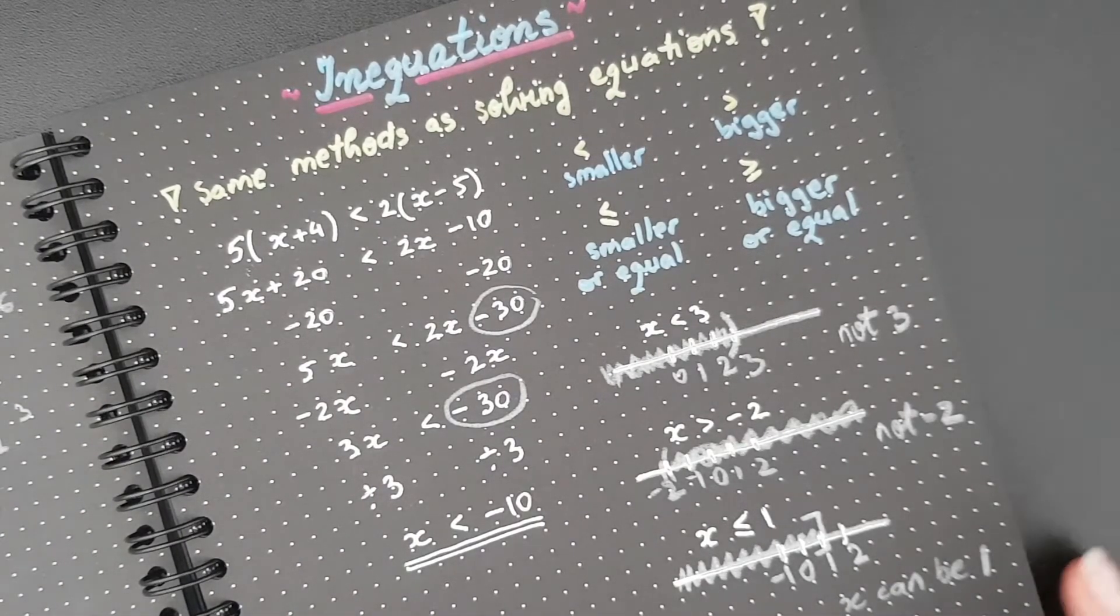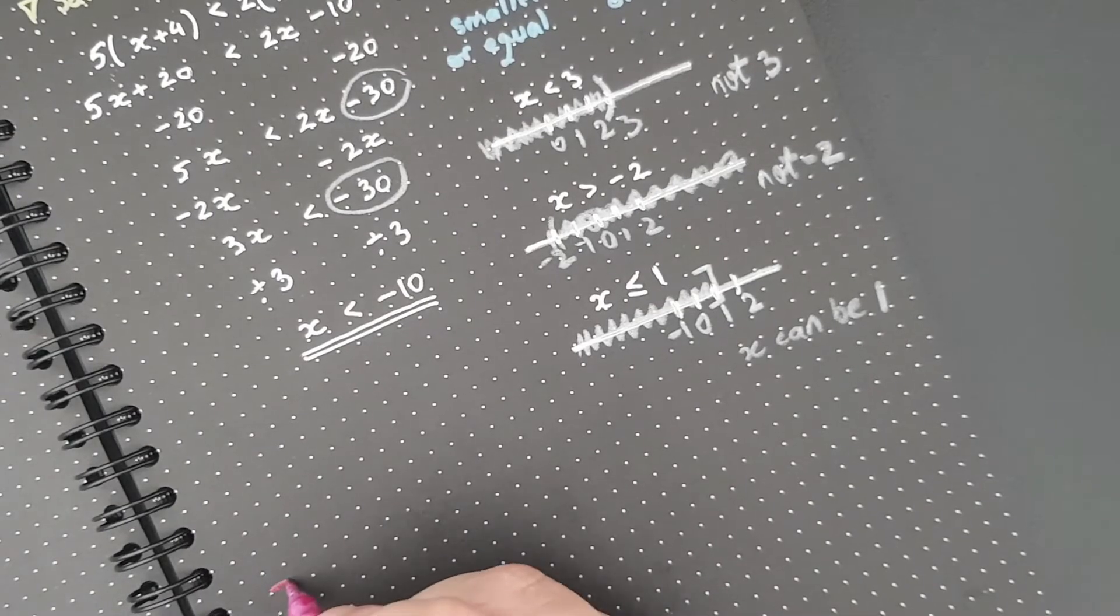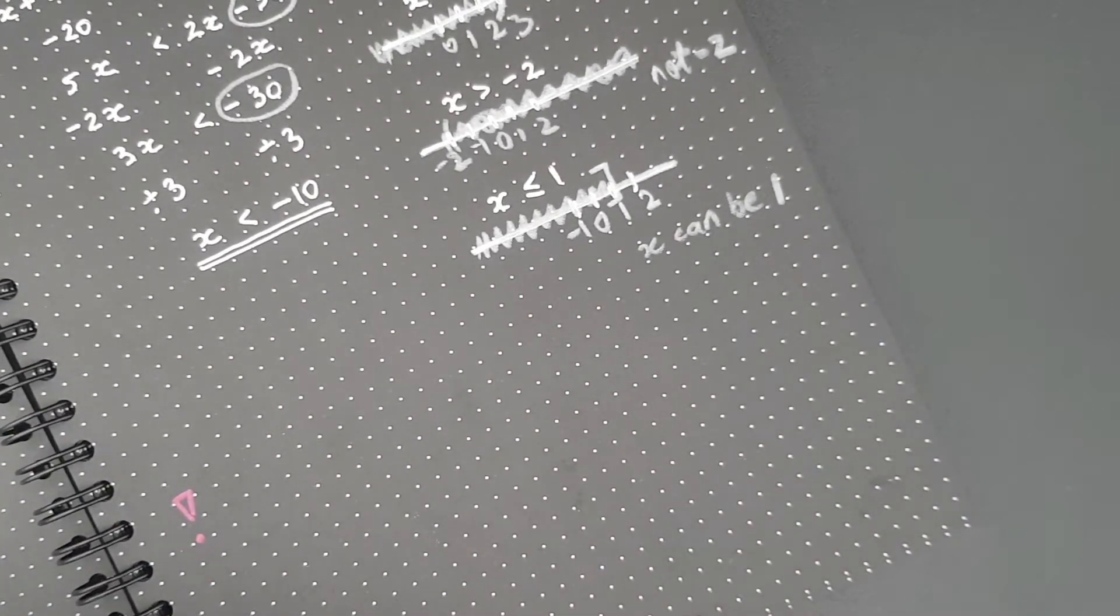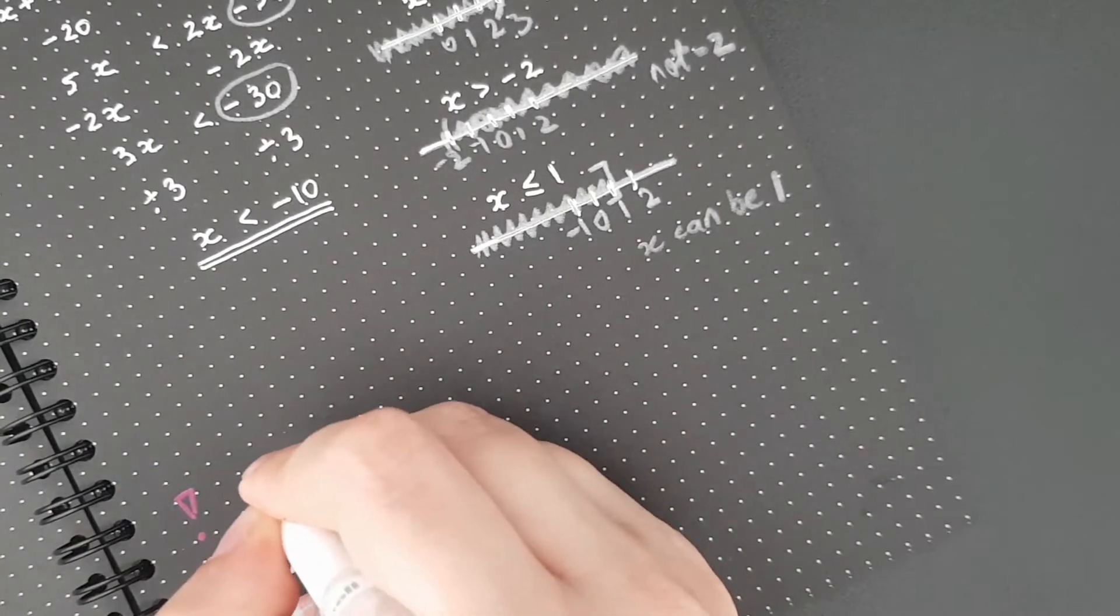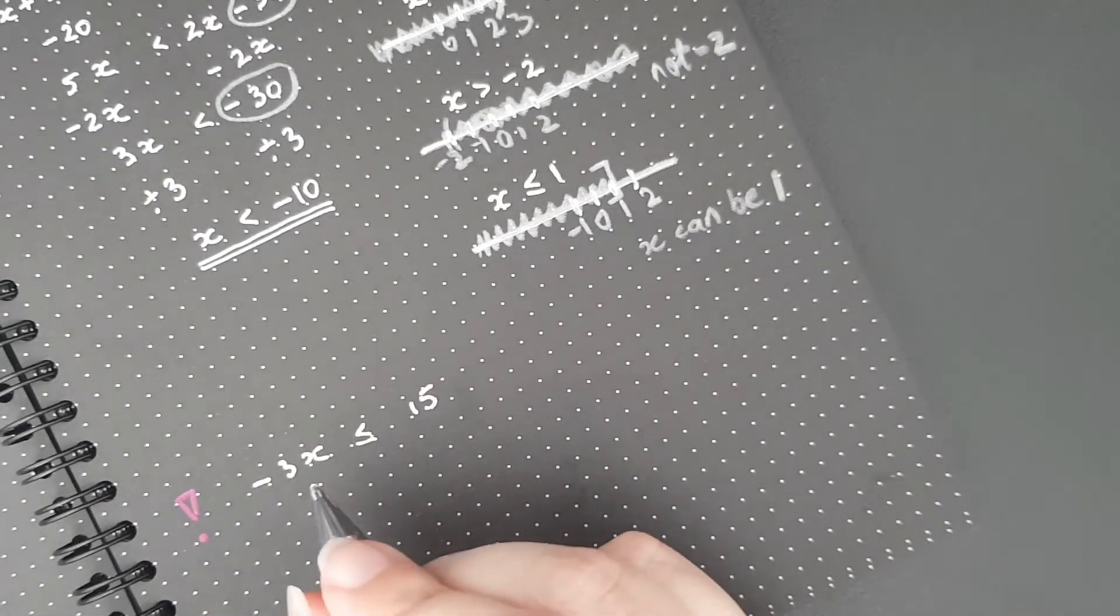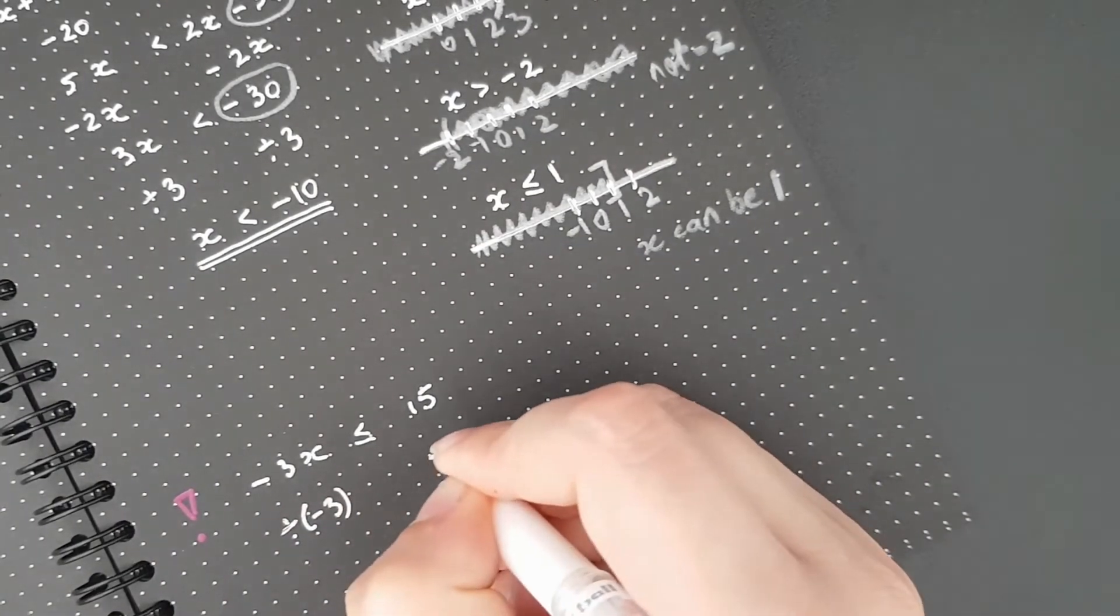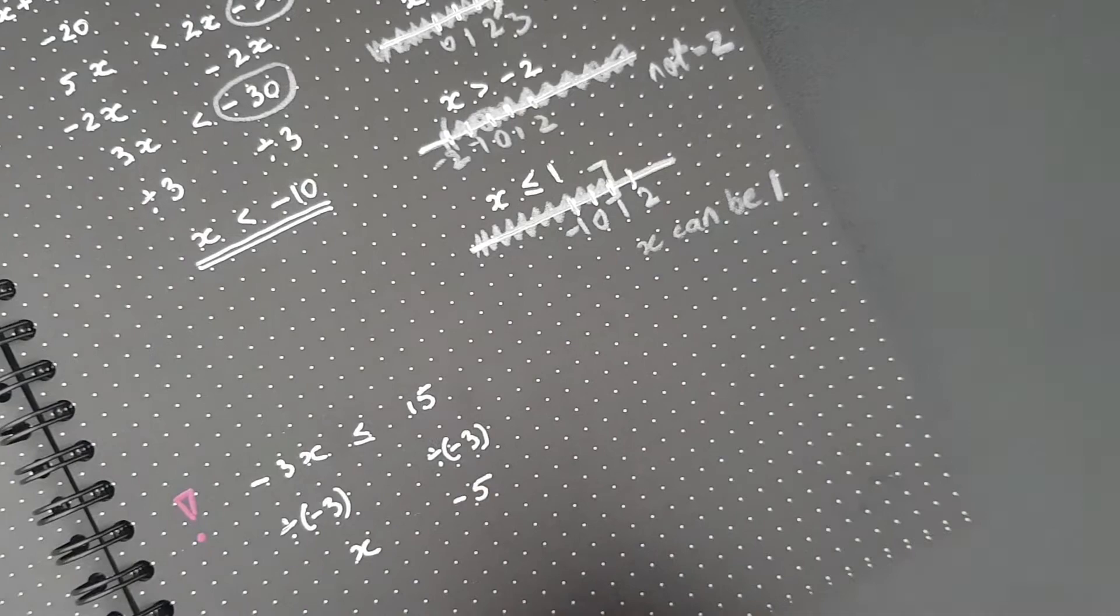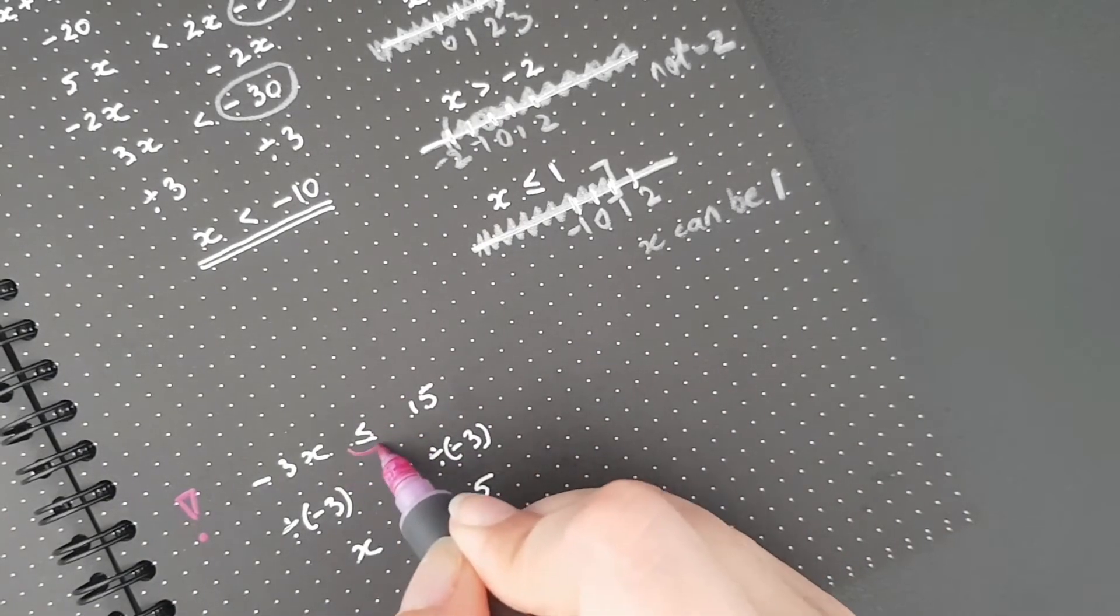Now, the only difference comes with the following. I'm going to put it on the side here on the bottom with a little exclamation mark. Because things can get a bit different when I have a negative number somewhere. So let's say I have -3x smaller or equal to 15. Normally, the way I do this is I divide by negative 3, which is what we're doing right now as well. And I go x here and I go negative 5 here. But there's something that happens with the sign. And we have to be a bit careful and properly understand